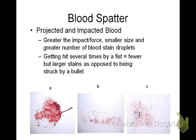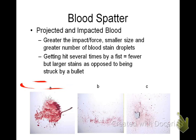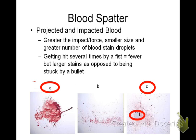Different types of blood spatter can come from projected and impacted blood. The greater the impact or force, the smaller the size and greater the number of blood stain drops. Being hit several times by a fist, like what you see here in A, produces fewer but larger stains, as opposed to being struck by a bullet — you can see the bullet hole. Somewhere in between might be a baseball bat.